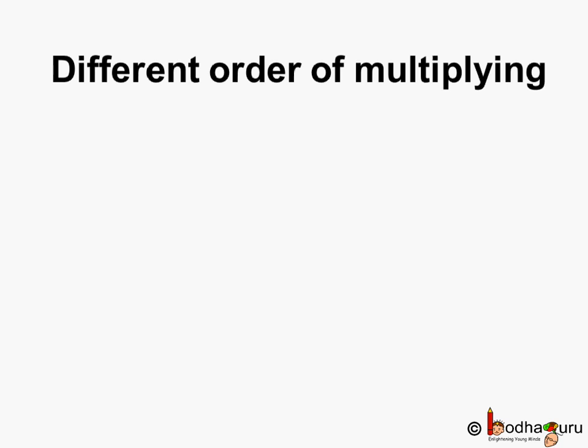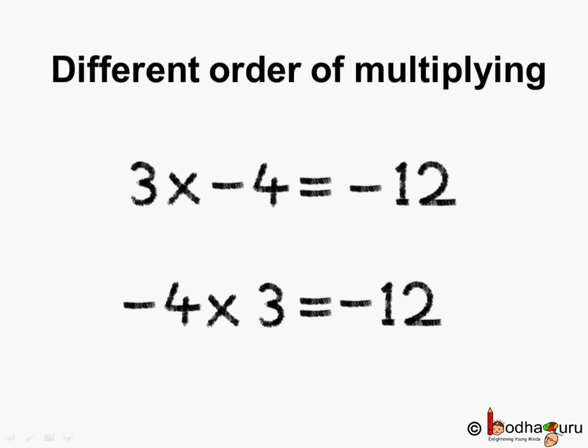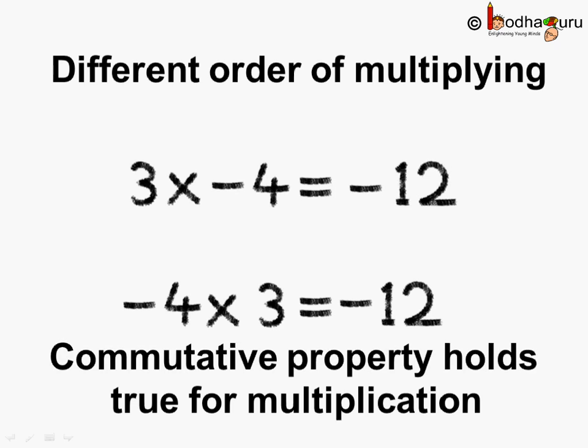Now let us see multiplication of integers first. 3 multiplied by minus 4 becomes equal to minus 12, as minus into plus becomes minus and 3 into 4 is 12. Let us change the order: minus 4 multiplied by 3 gives minus 12 again. So commutative property holds true for multiplication — we get the same answer even when we change the order of multiplication.